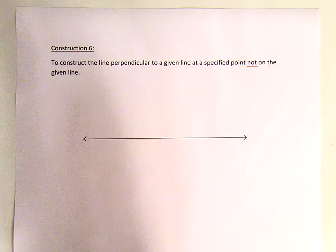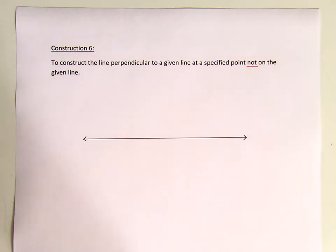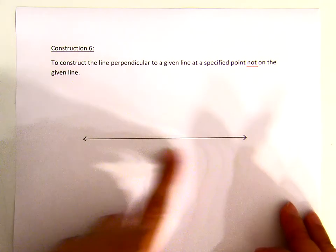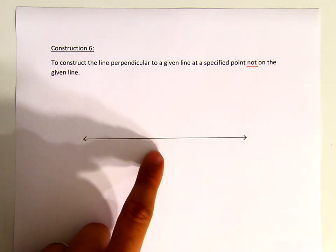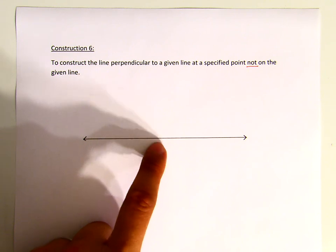You can see the difference between Construction 5 and Construction 6. In Construction 5, you are given a line and you need to construct a line perpendicular to this line at a specified point on that given line. That's Construction 5.